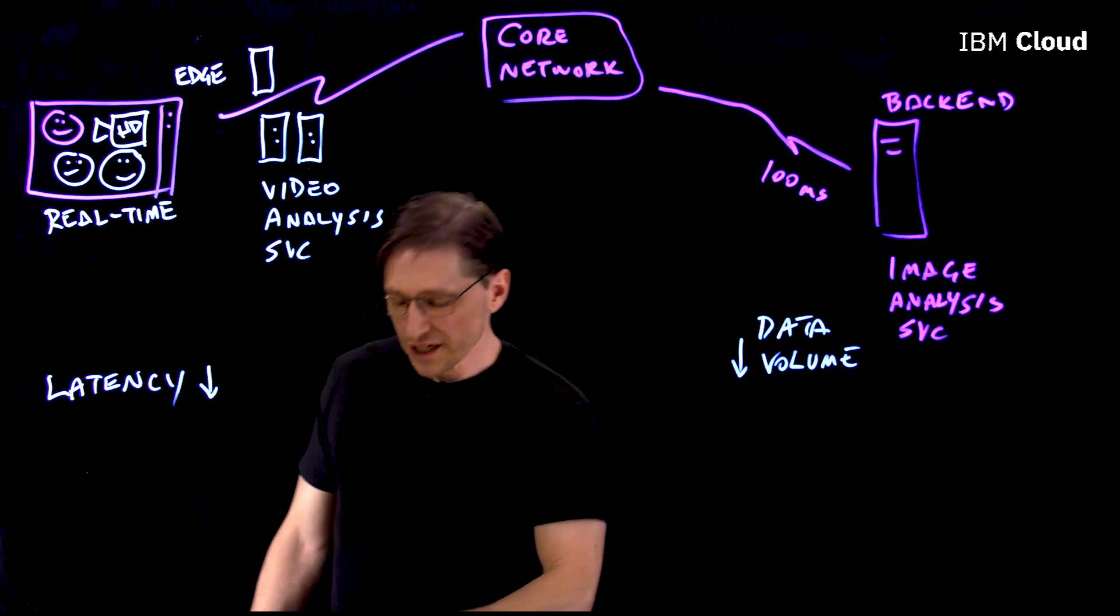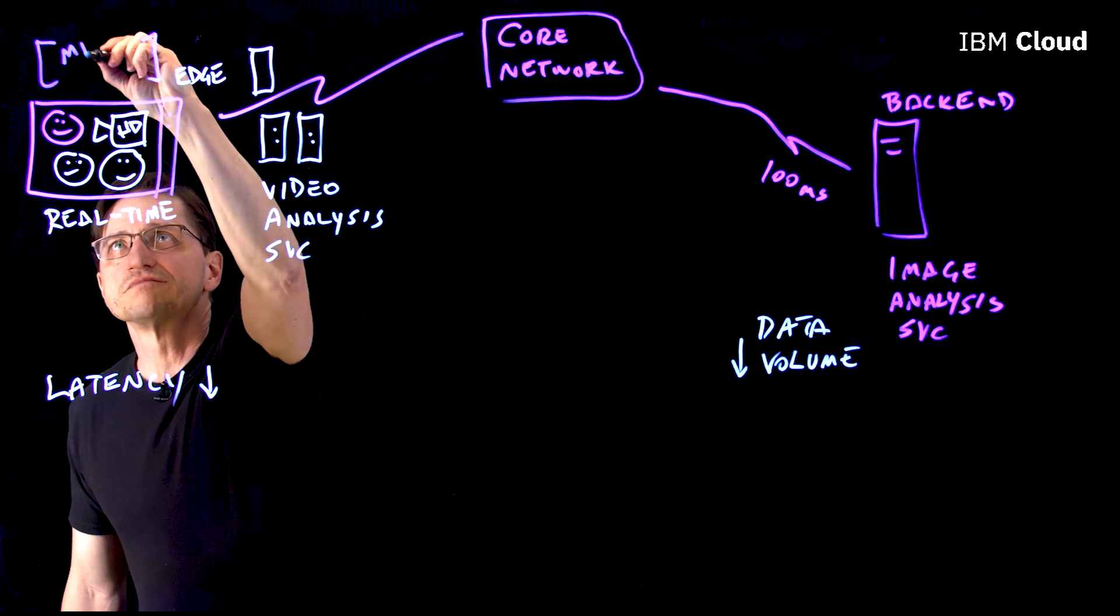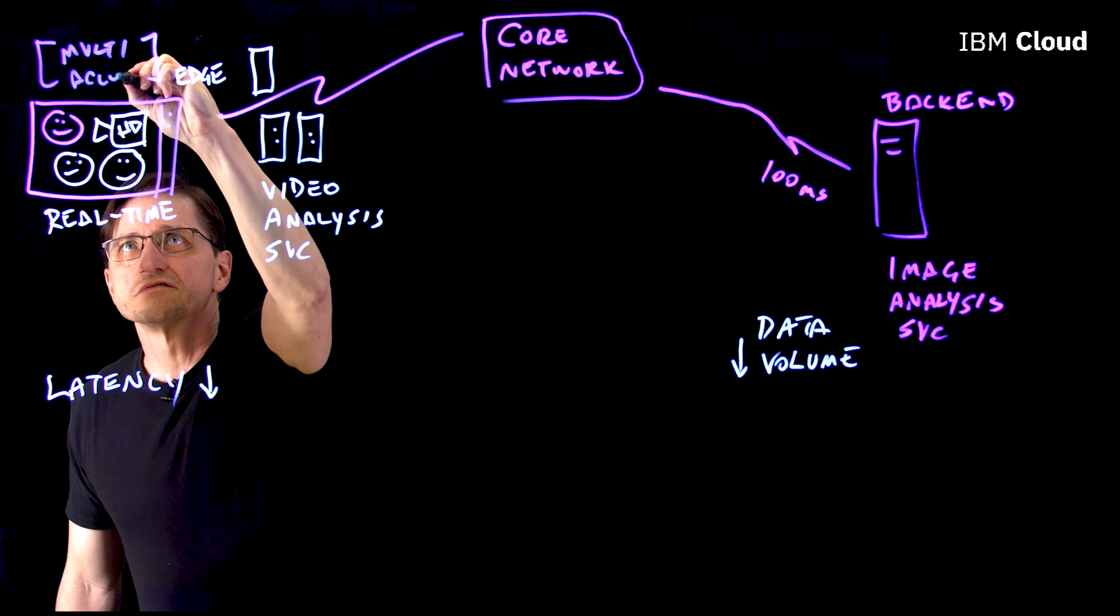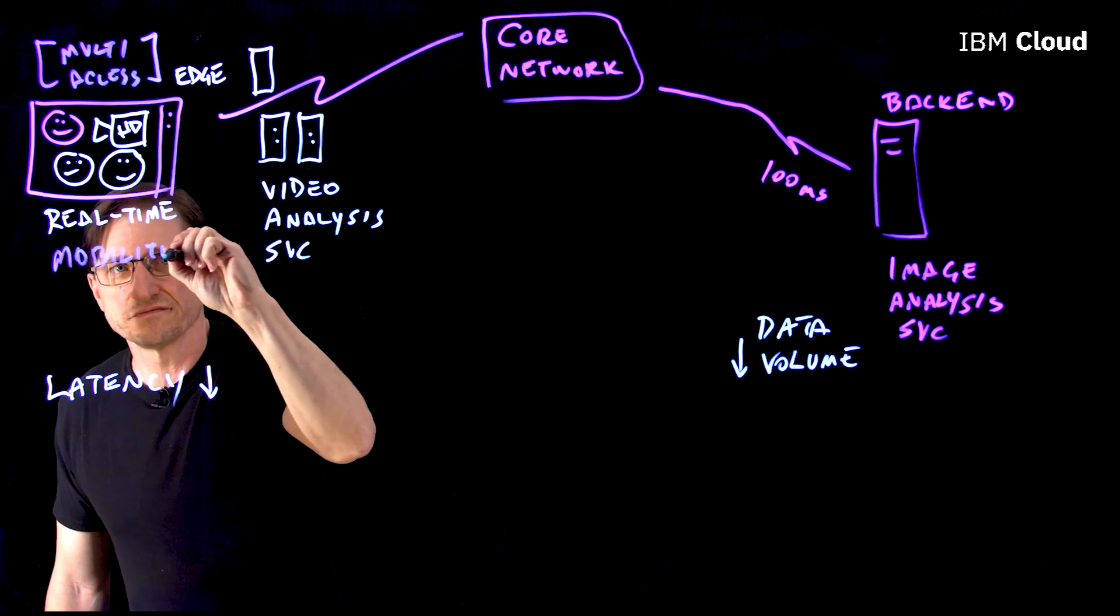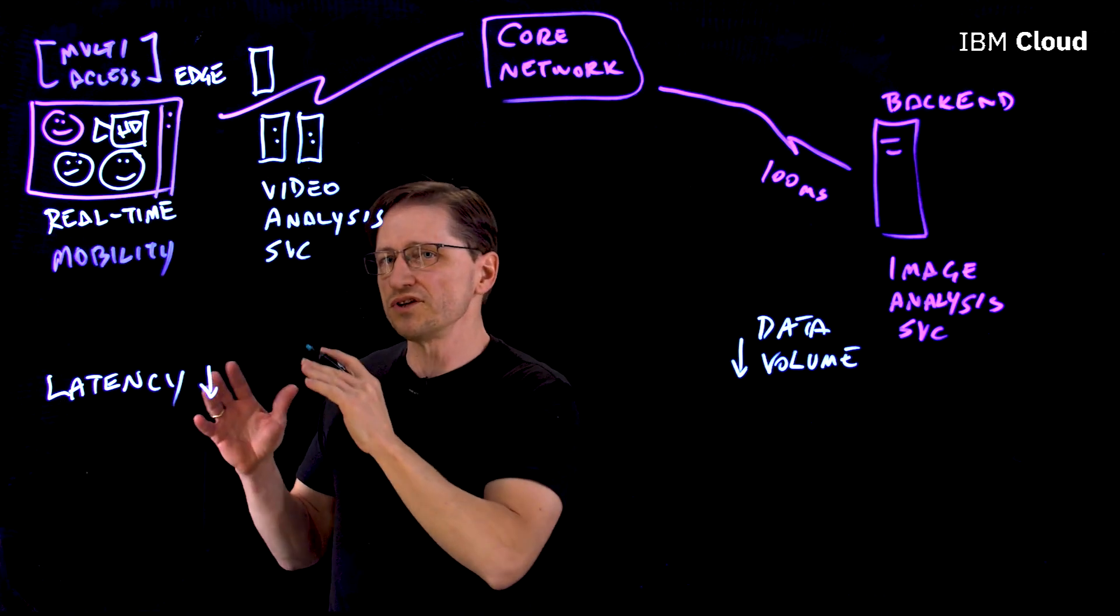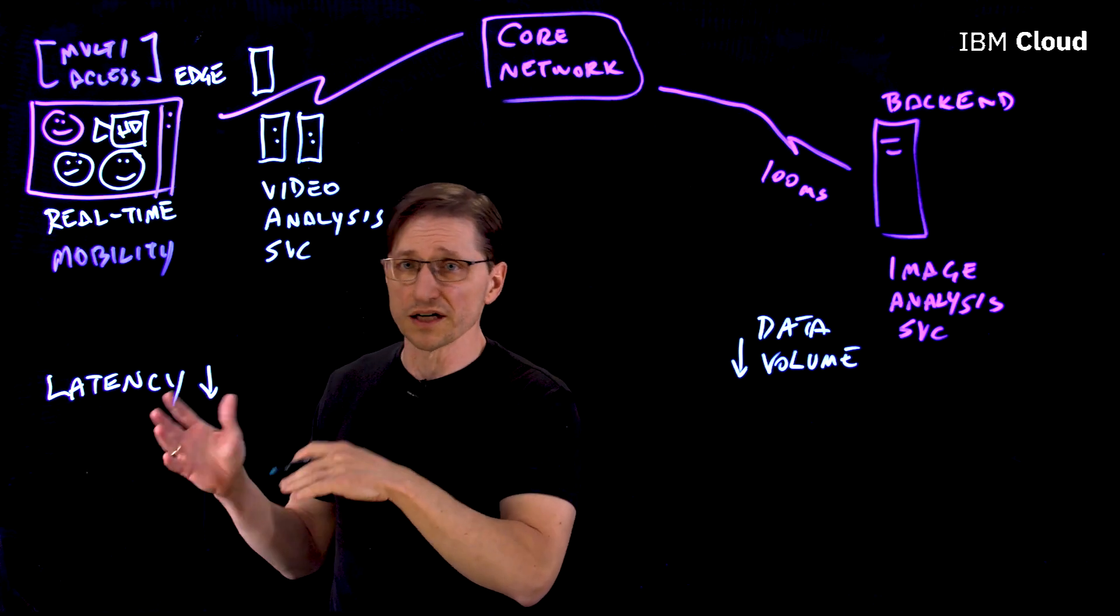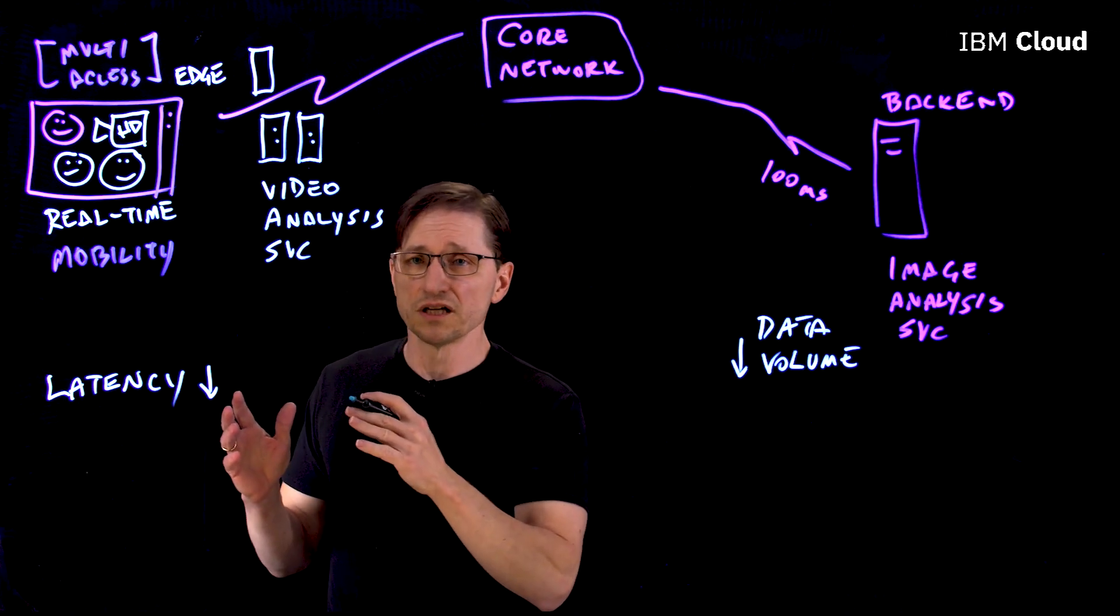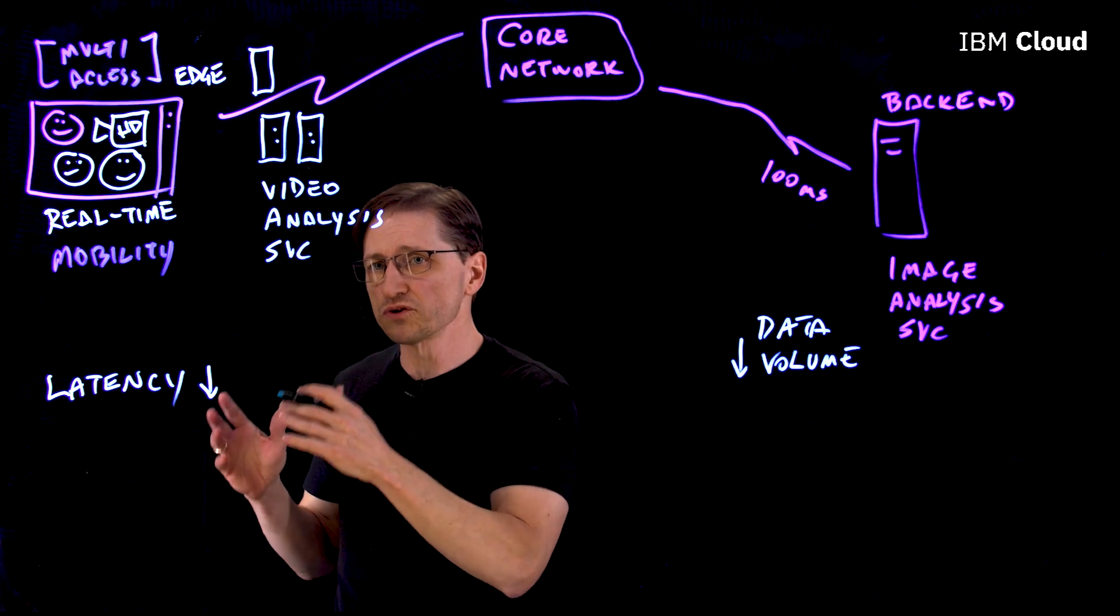Where multi-access edge computing comes into play is when we add a third element: mobility. In the prior examples, we were assuming that these edge computers were in a fixed location. For example, at a retail location, providing a shopping experience. Maybe an IoT device in a factory that's doing assembly. Those are examples where the edge computer location is known.